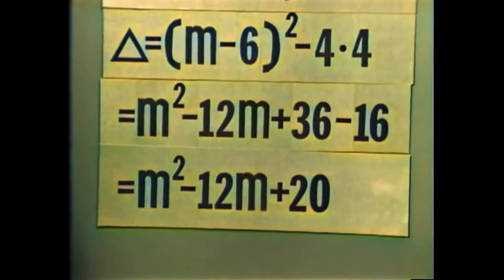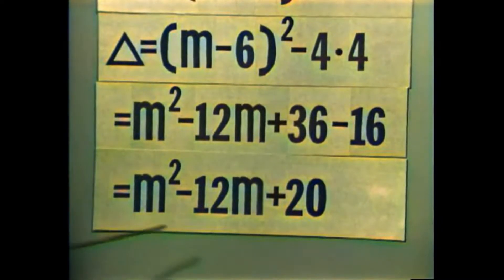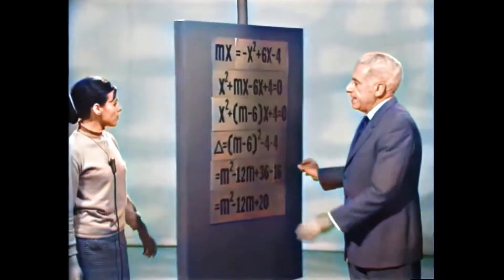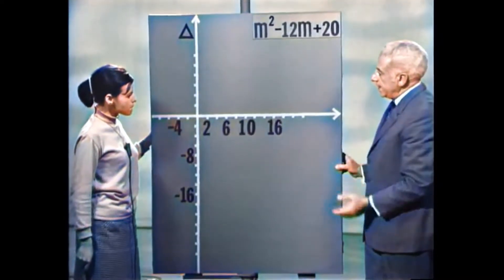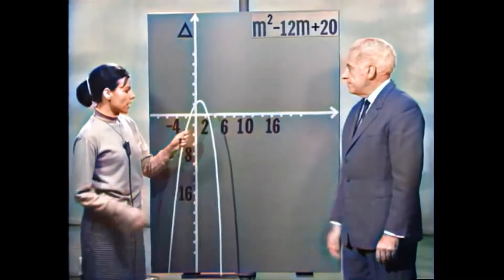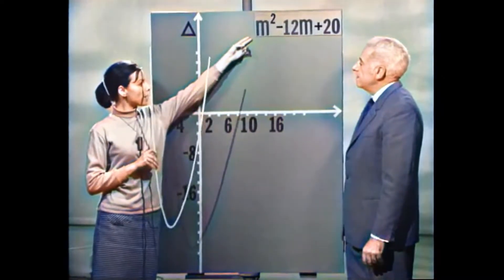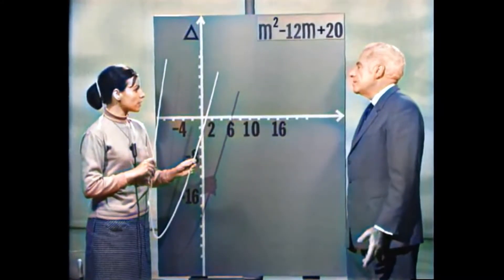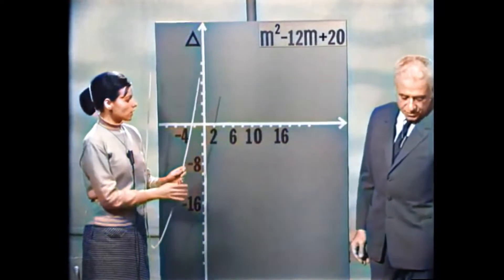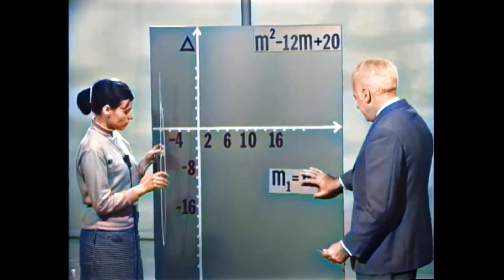הדיסקרימיננטה עצמה היא פרבולה — M² מינוס 12M פלוס 20. אם נסתכל בגרף, נוכל לראות היכן הדיסקרימיננטה חיובית, אפס, או שלילית. הפרבולה חותכת את הציר האופקי ב-M שווה 2 וב-M שווה 10.